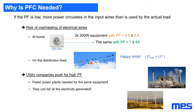Utility companies push for high power factor — and it makes sense. You have way more current than what's actually used circulating in the wires, and all this comes from power plants. If all equipment has a bad power factor compared to a good one, you may have to add more power plants to the system, and we all know that power plants are not the cleanest of systems.